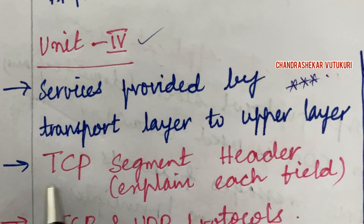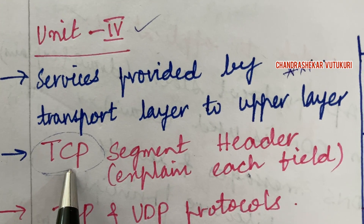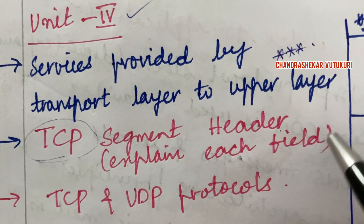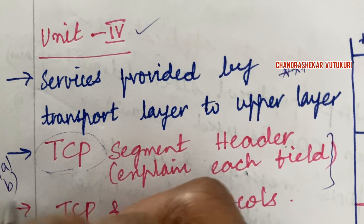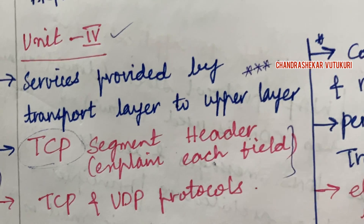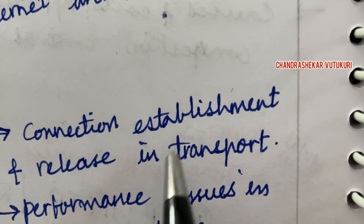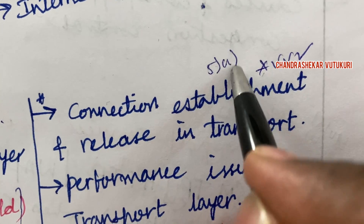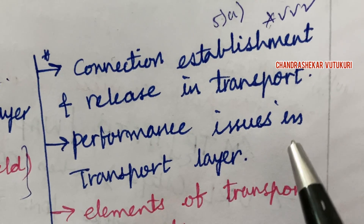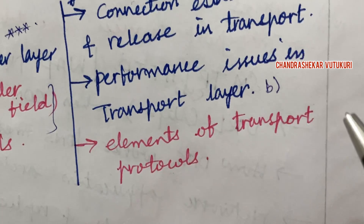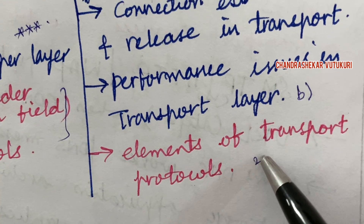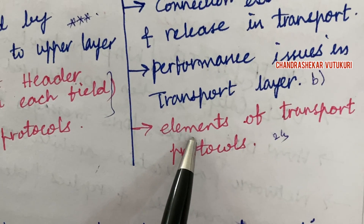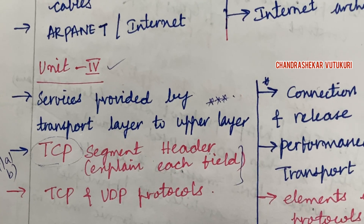TCP segment — related to TCP — you are going to get a sure question related to the segment header as well as TCP and UDP protocols. From this we can expect 4A, 4B, and a short question — such as listing the different protocols. Connection establishment and release in transport mode is said to be a repeated and topmost question, which may be a 5A. Performance issues in the transport layer may be a B question, and elements of transport protocol may be a long or short question.